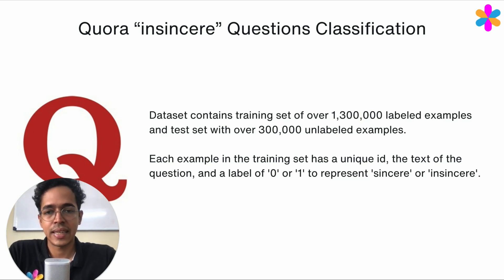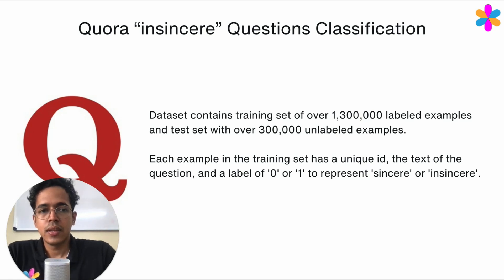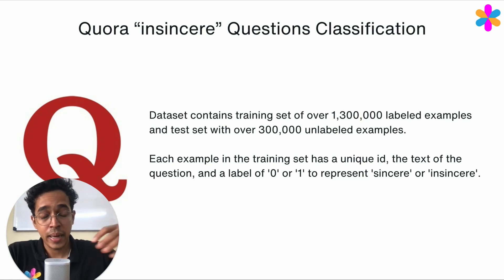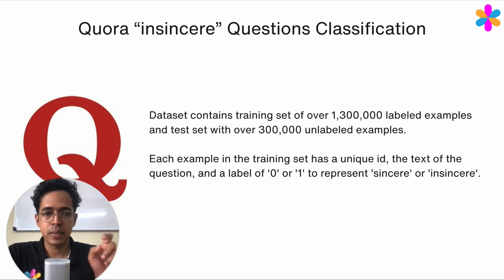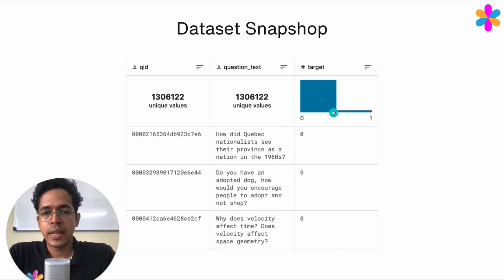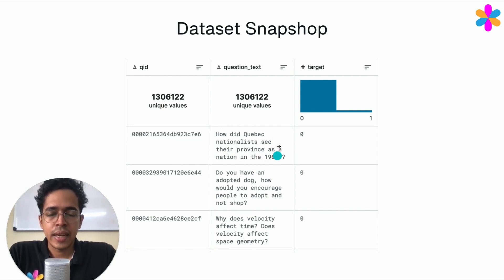There are almost 300,000 in the testing set. The dataset has sentences where each sentence is labeled sincere or insincere — sincere is zero and insincere is one. We'll download the dataset and write the code for running LIME on it. First we'll build a machine learning model to make classifications, then try to explain why a particular prediction was made. The dataset comes as a CSV file with three columns: the ID, the sentence, and the target value — zero or one.